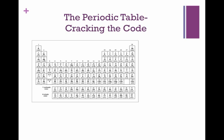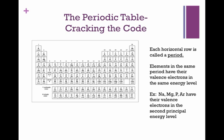The periodic table is a fascinating tool, but we do have to know how to use it. First of all, it's important to know that each horizontal row is called a period. Elements in the same period have their valence electrons in the same energy level. For example, sodium, magnesium, and phosphorus all have their valence electrons in the third principal energy level.